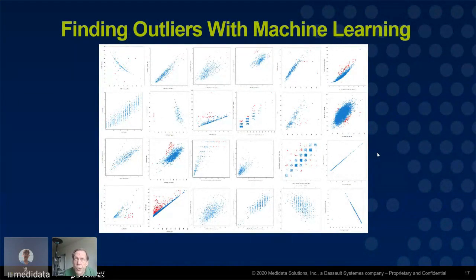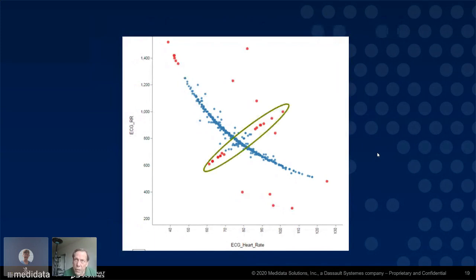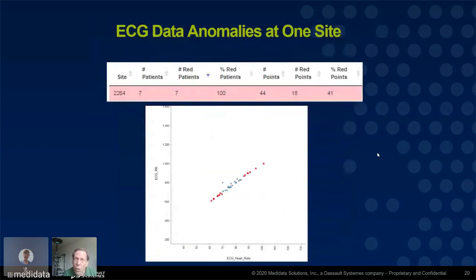We can use machine learning to find outliers. Here's a quick example of something that can go wrong: most of the data are on a hyperbolic arc from the upper left to the lower right, but there's a line going from the lower left to the upper right. When we focus on that line, it turns out that all of those observations were taken at one site, which was clearly doing something wrong because its pattern is so different from all the other sites.